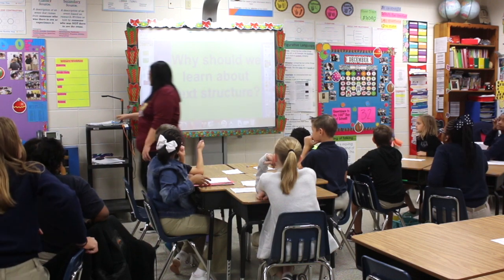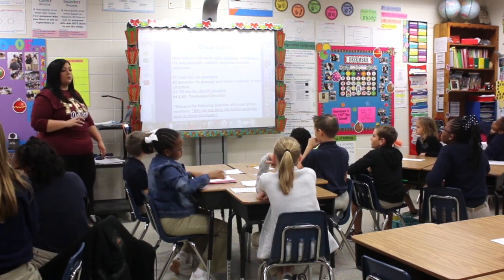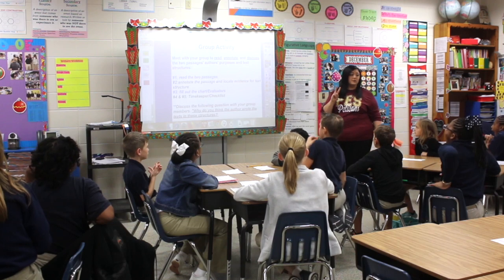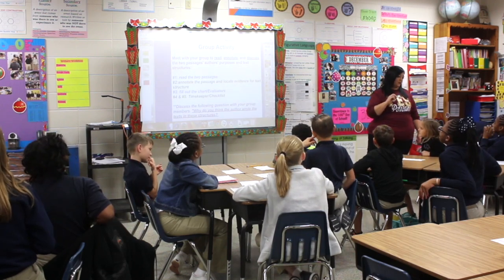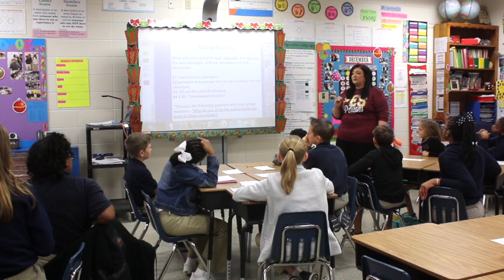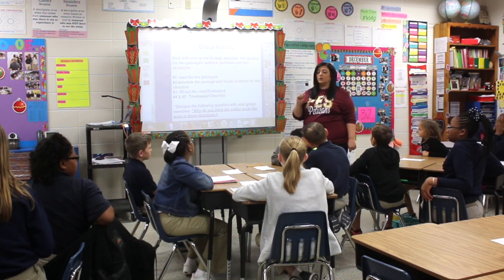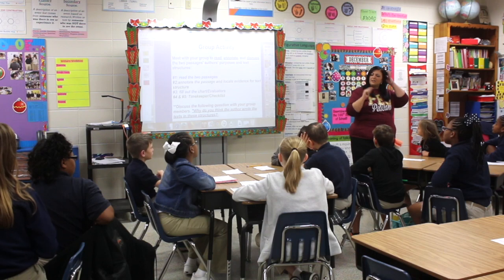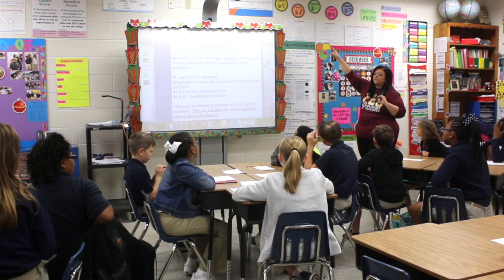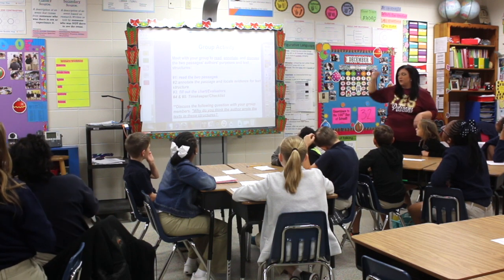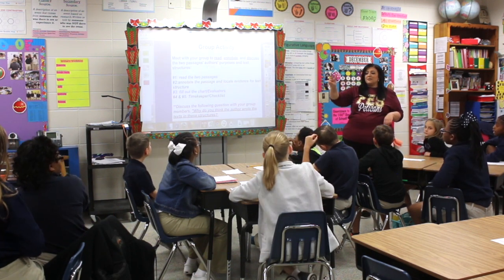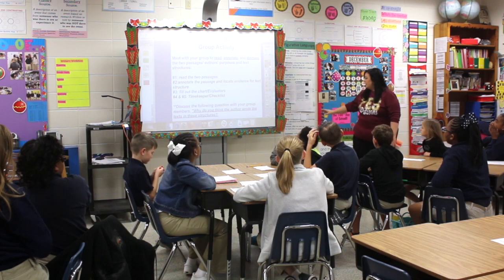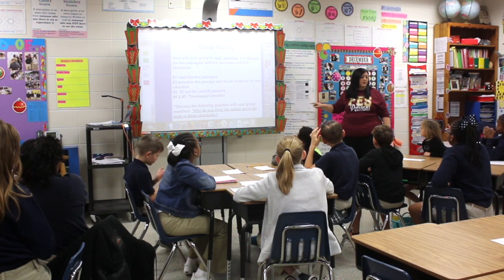Let's talk about what we're going to do today in our carousel. You and your group are going to meet at your designated carousel. You're going to read two texts closely to figure out the text structure. While you're reading, you need to annotate, circle, underline, and jot down notes on clue words that help you figure out the structure. You also need to think about why the author wrote this story — what is the purpose? And find two pieces of evidence to support the text structure. You're going to put all of that in your chart.